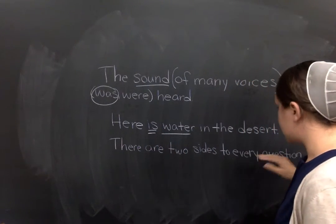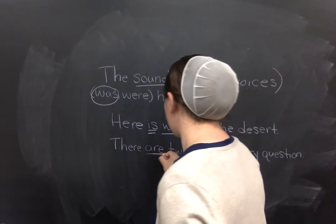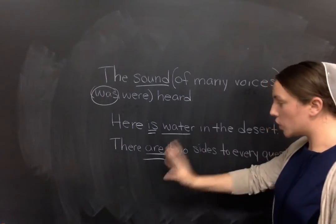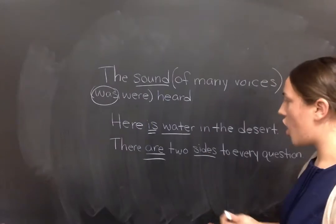Now, there are two sides to every question. What's our verb? Let's find that first. Are is a verb. Now, here and there cannot be your subject. So, who or what are? Sides are.